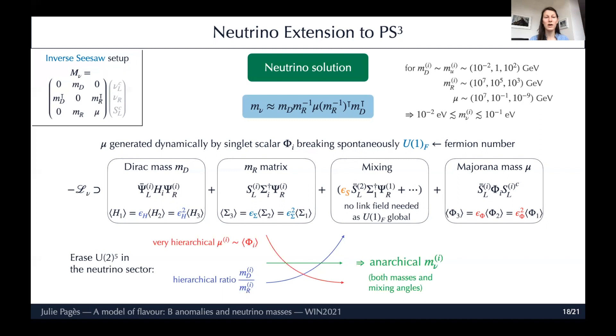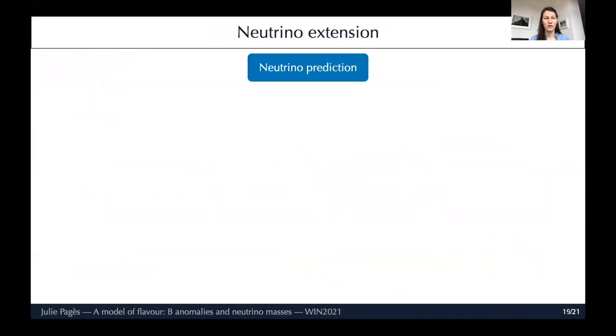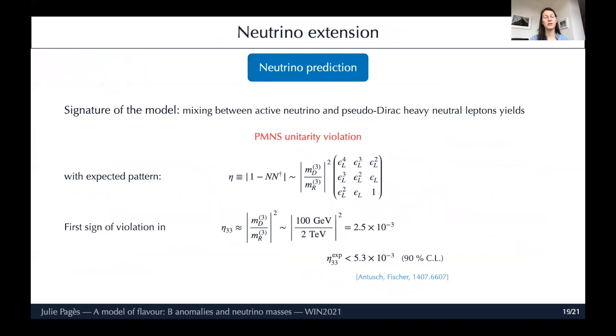Since we have U(2)^5 in the Yukawa sector, it means the ratio M_D/M_R will be very hierarchical and it also appears quadratically in the formula. We need a very hierarchical Majorana mass in order to compensate for this and yield an anarchical neutrino mass matrix. This is done dynamically by spontaneous symmetry breaking of U(1) fermion number via a new singlet scalar φ. We can realize this anarchical pattern, both in the eigenvalues and in the mixing angles, by assuming these two relations between the VEVs - the first one is for eigenvalues and the second one is for the mixing.